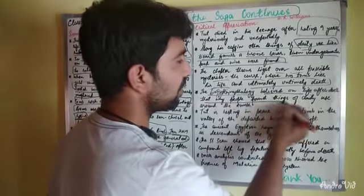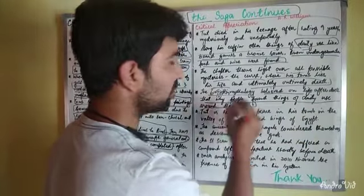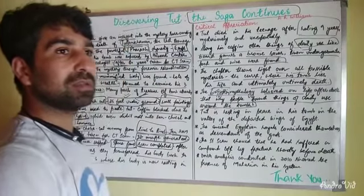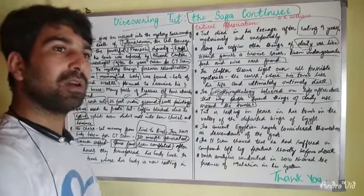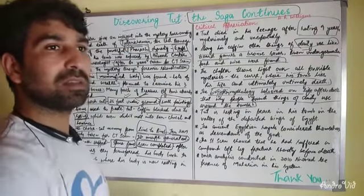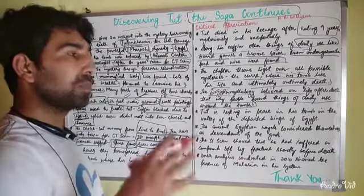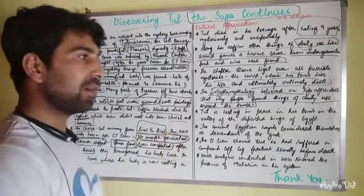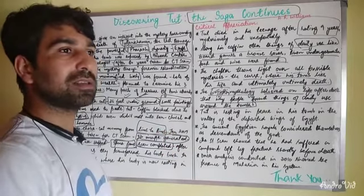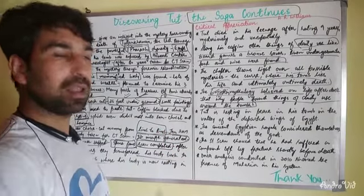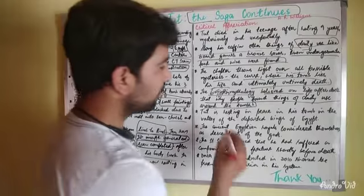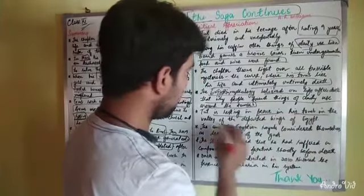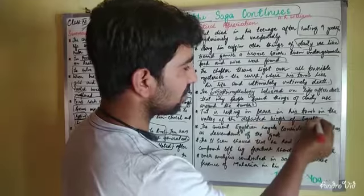Egyptian mythology believed in life after death, which is why people found things of daily use around the tombs — in the burial places — because people there believed in life after death and thought these things would help them in living there. Tut is resting in peace in his tomb in the Valley of the Departed Kings of Egypt.